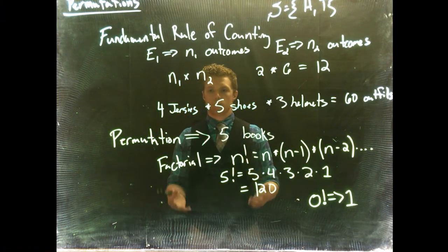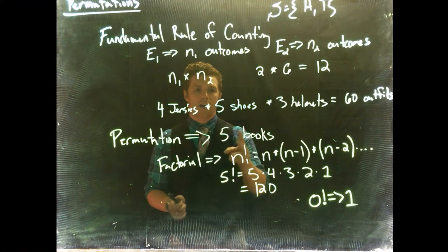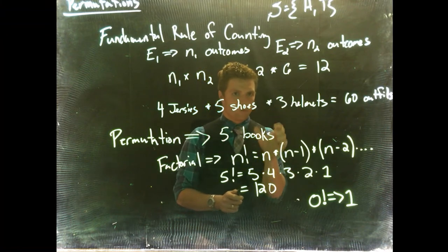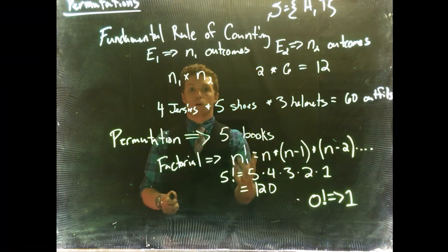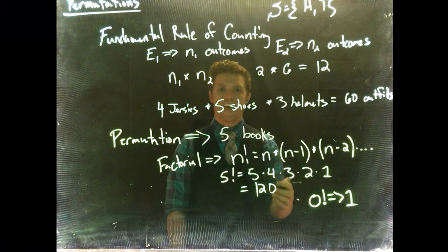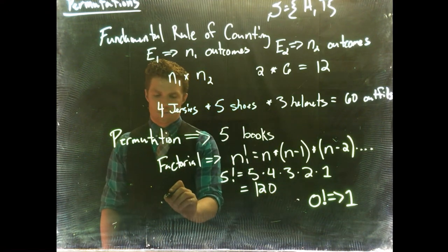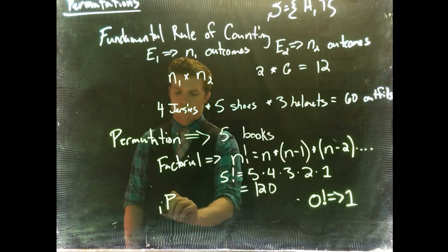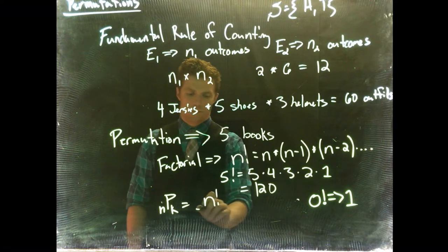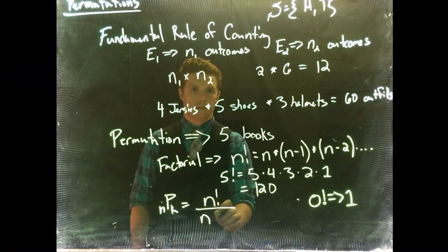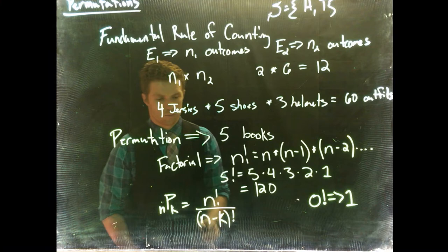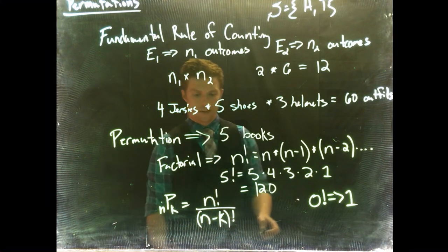Okay. So we have all these permutations, but what if we have five books, but we can only put three of them in our shelf at a time? Like there's only room for three. How many orders are there? Well, we can do that one too. This is permutations taken K at a time. So it's going to be permutation, and then this is going to be N K at a time. And that's going to equal N factorial divided by N minus K factorial. Let's do our book example here.